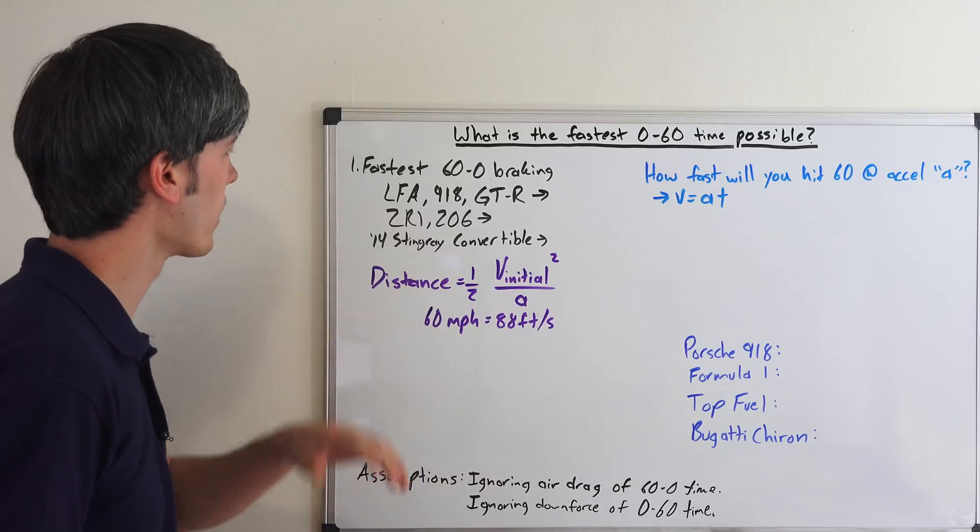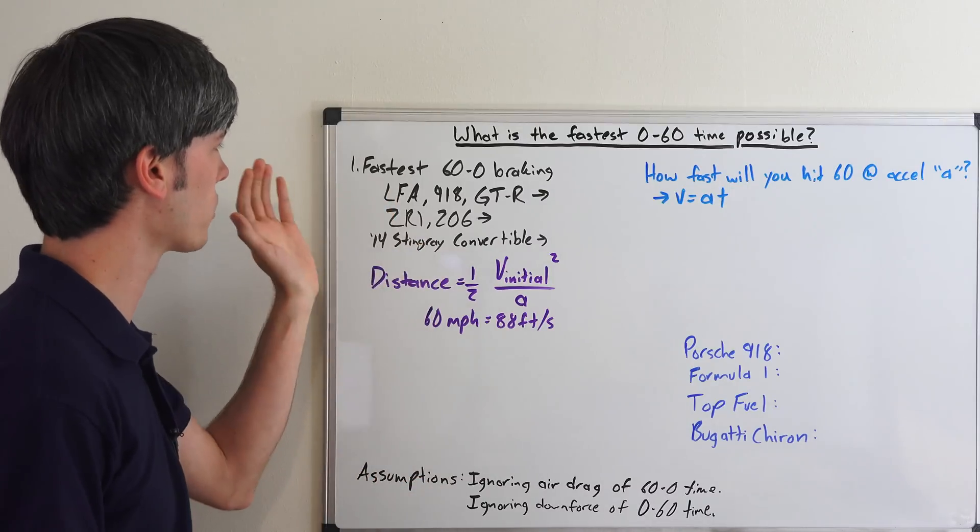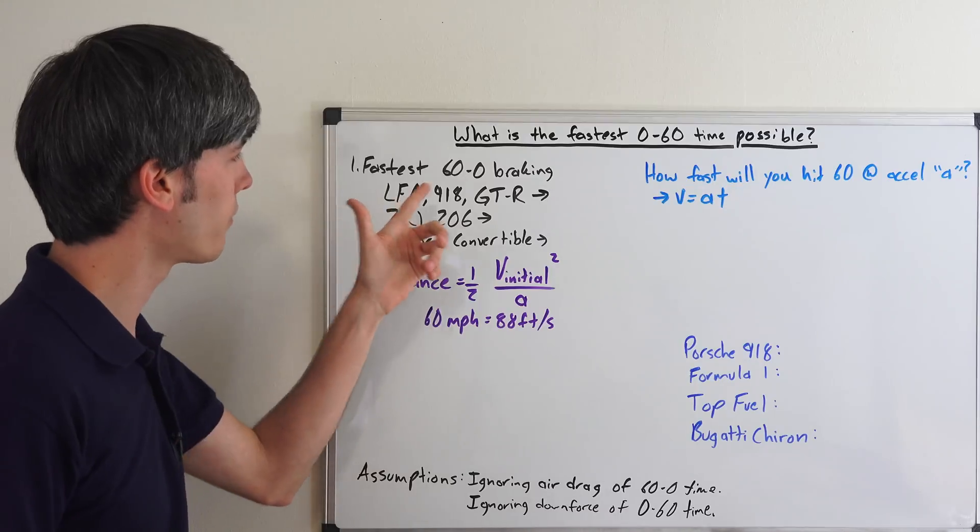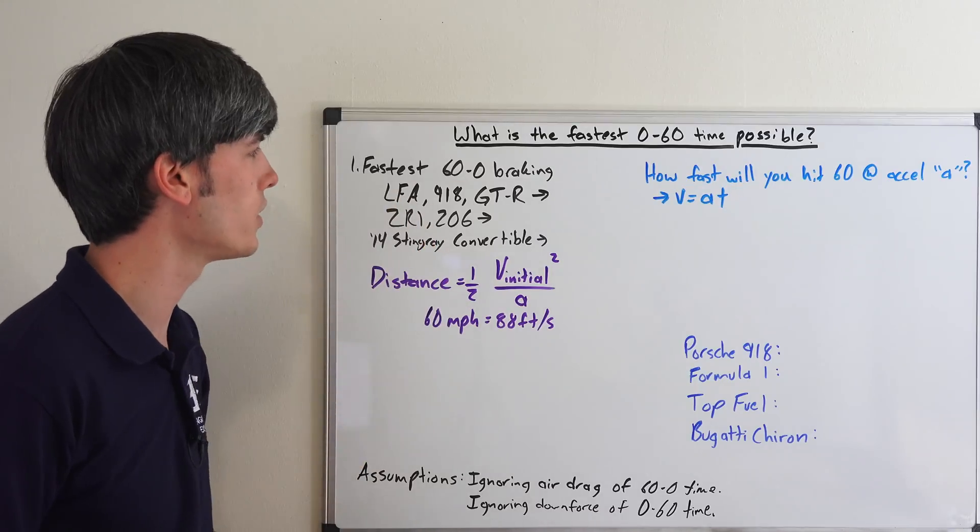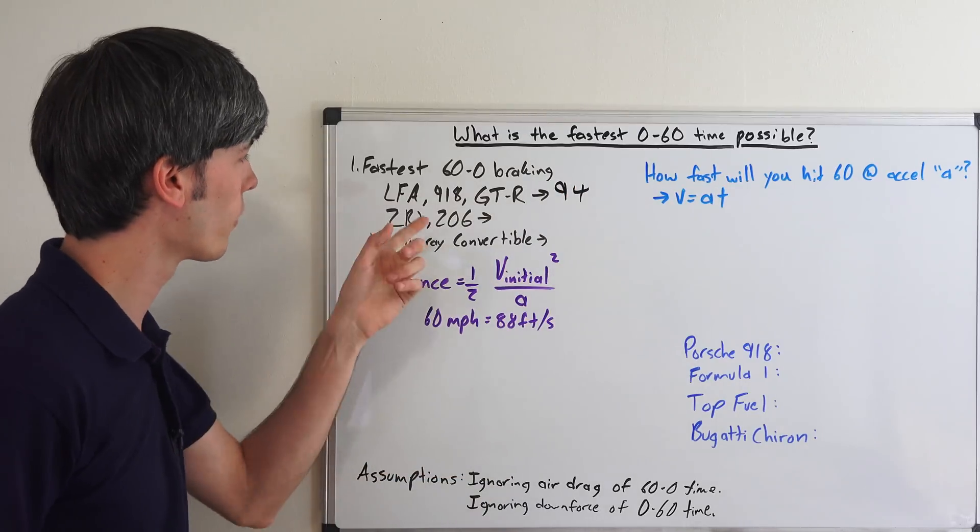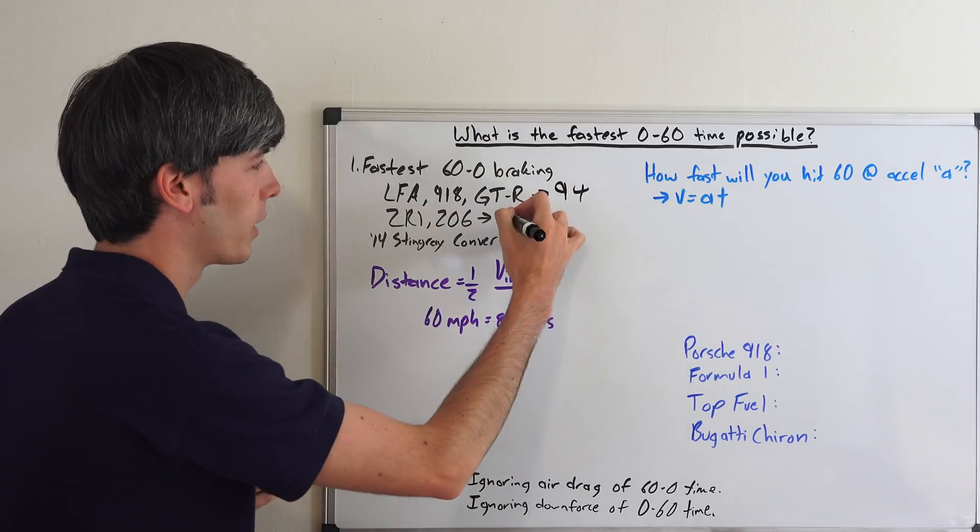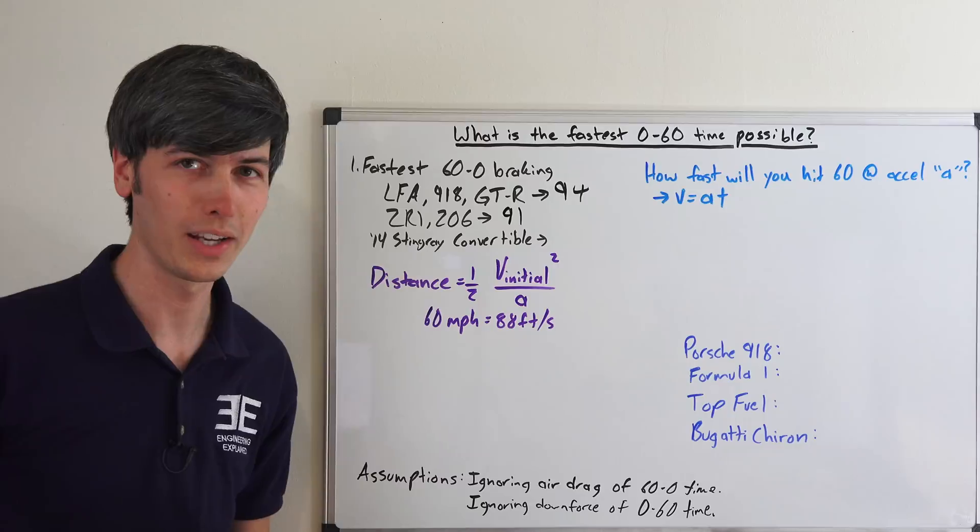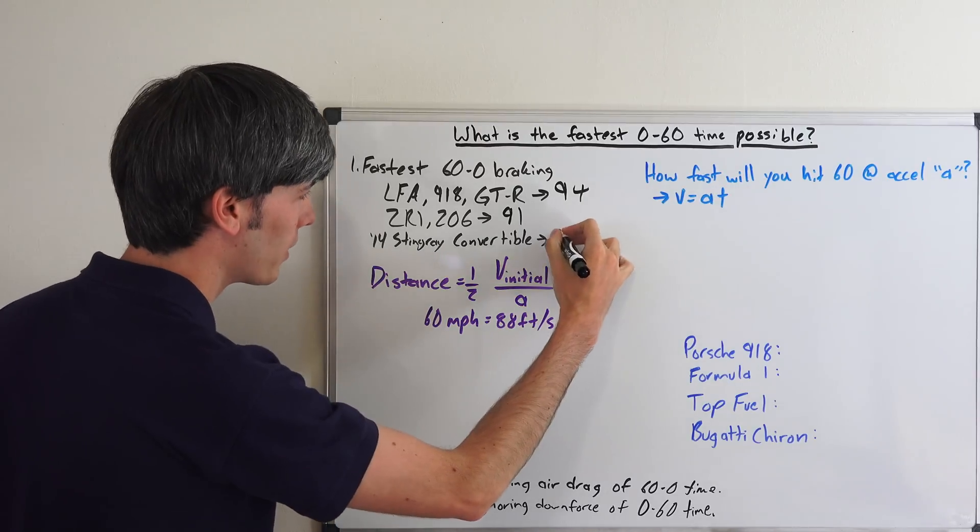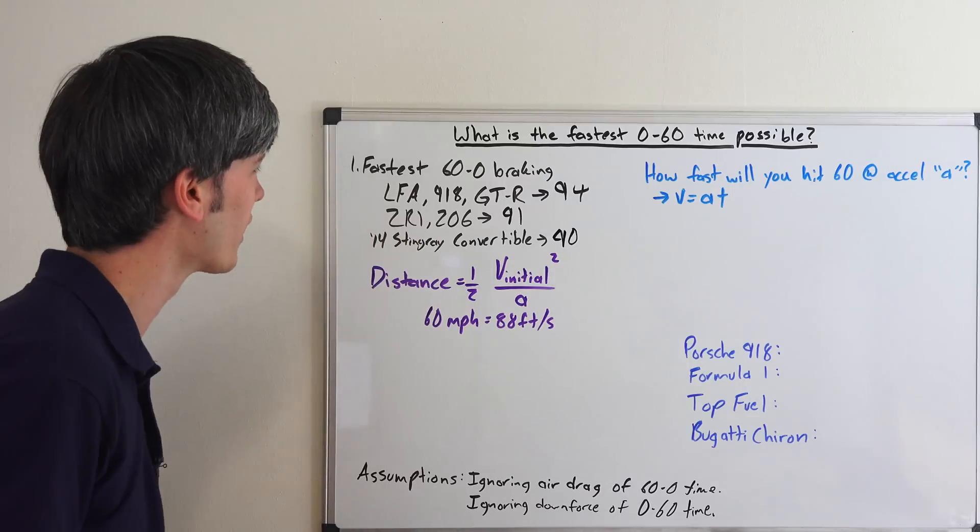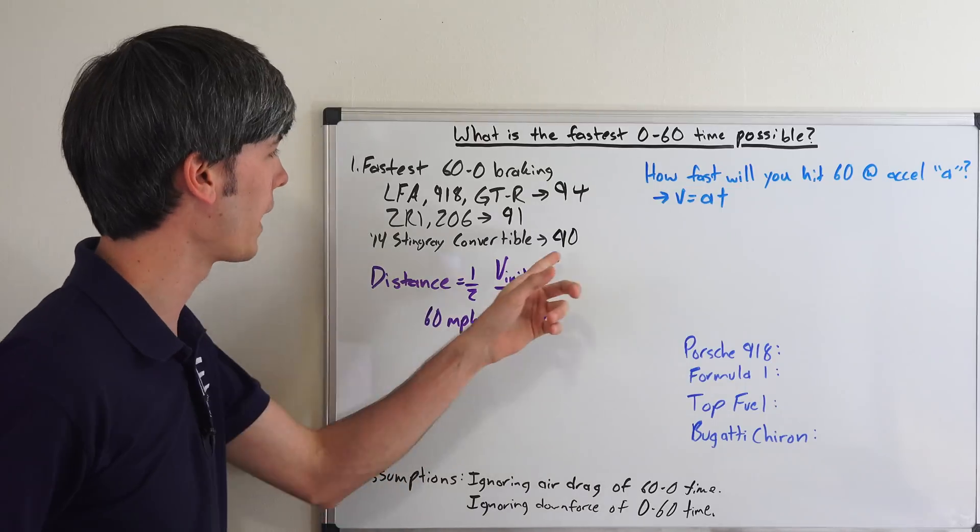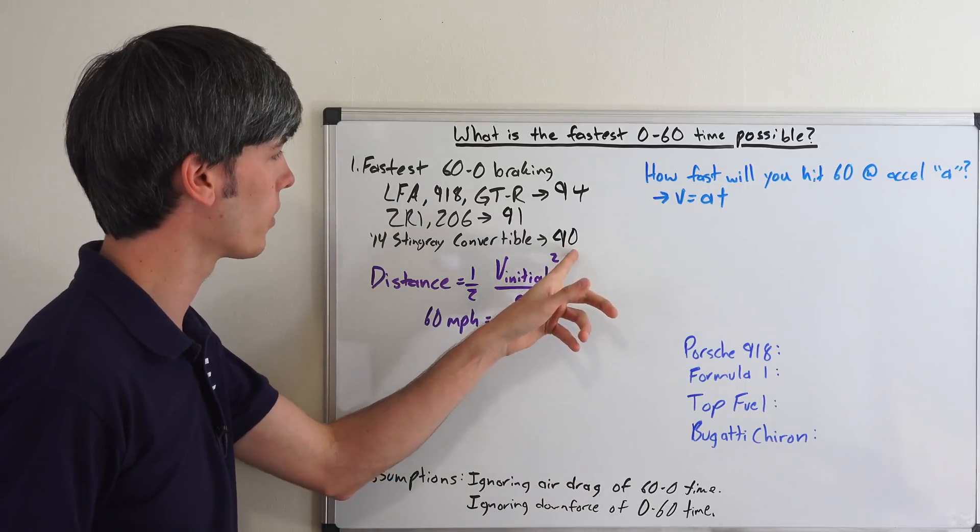Looking at some stats from Motor Trend, they did the top 20 vehicles which had the quickest braking from 60 miles per hour to 0. The LFA, the Porsche 918, the Nissan GTR, they were all able to stop in 94 feet, which is very impressive. The Corvette ZR1 and Z06 were able to stop in 91 feet. And surprisingly, the 2014 Stingray convertible was able to stop in just 90 feet, demolishing these supercars. Anyways, the one we're looking at here is 90 feet.